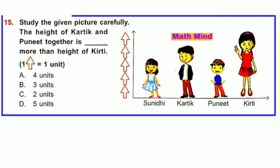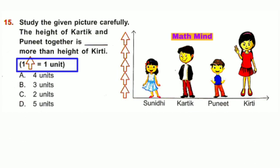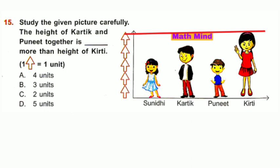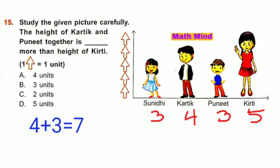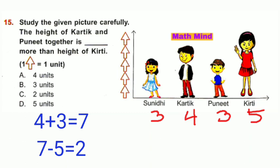Question number 15: The height of Karthik and Punit together is how much more than the height of Kirthi? 1 arrow represents 1 unit. Sunidhi: 3 units, Karthik: 4 units, Punit: 3 units, Kirthi: 5 units. Height of Karthik and Punit together: 4 + 3 = 7 units. Kirthi is 5 units. Subtracting 5 from 7, we get 2 units. So, the height of Karthik and Punit together is 2 units more than Kirthi. Option C is correct.